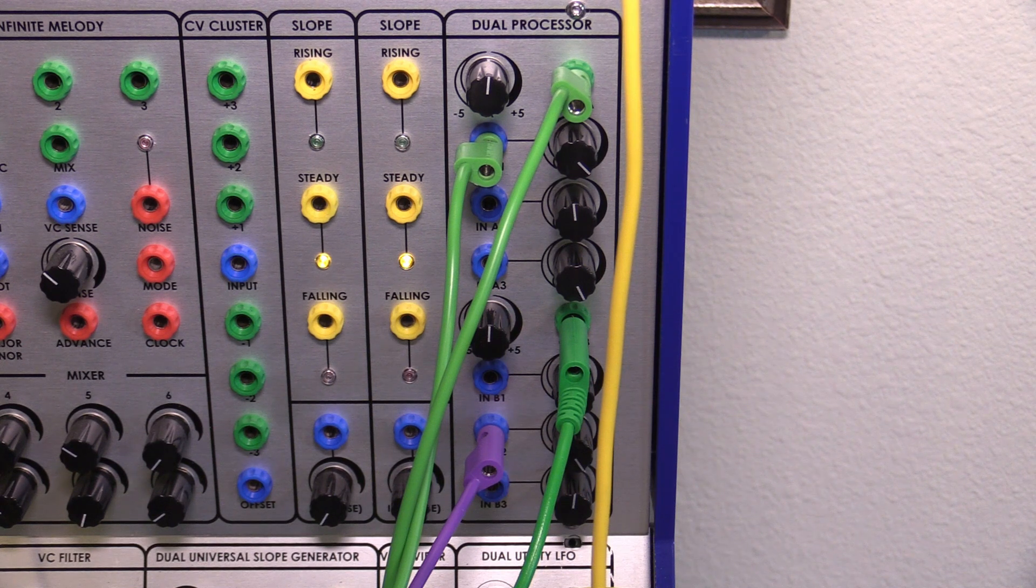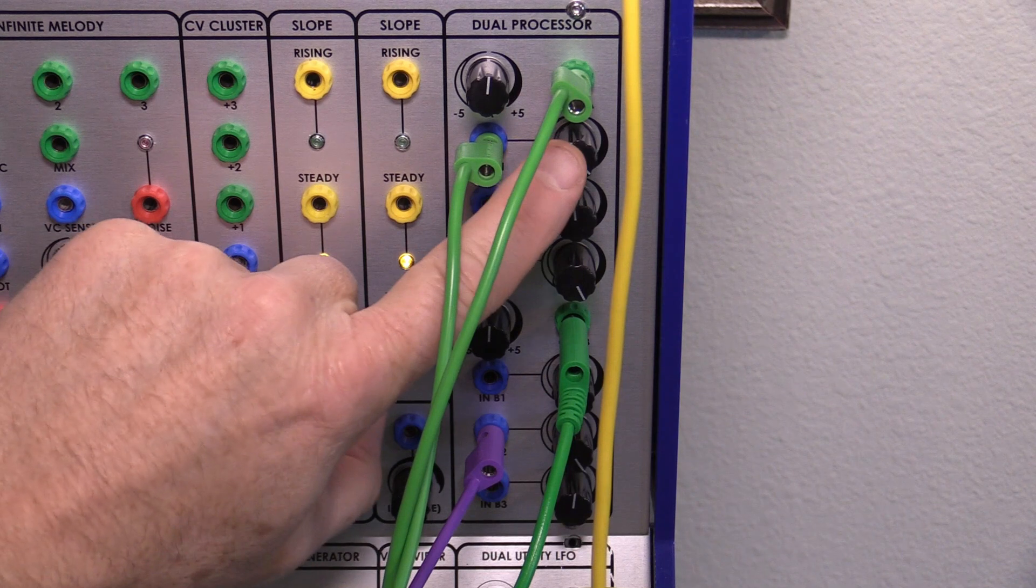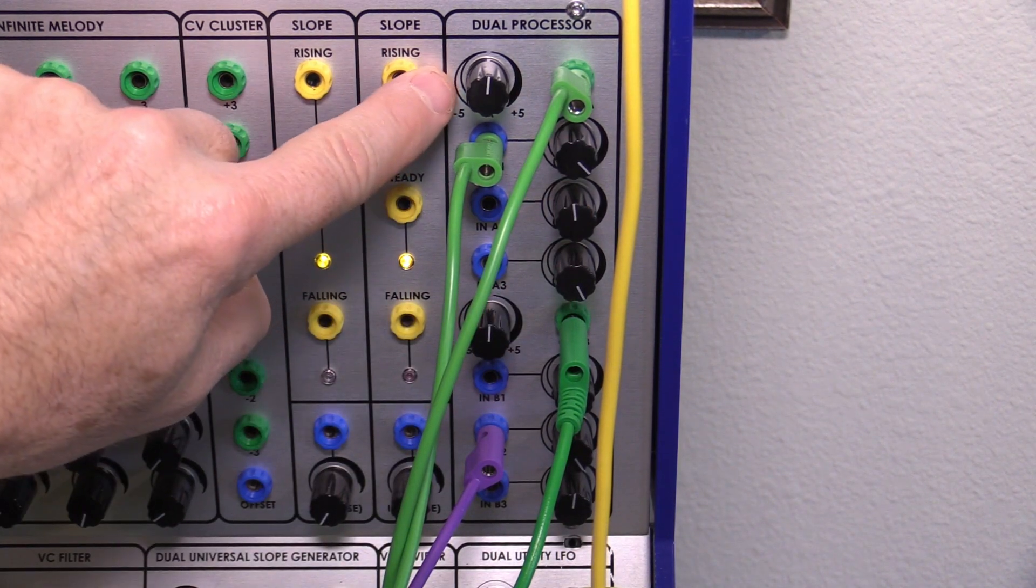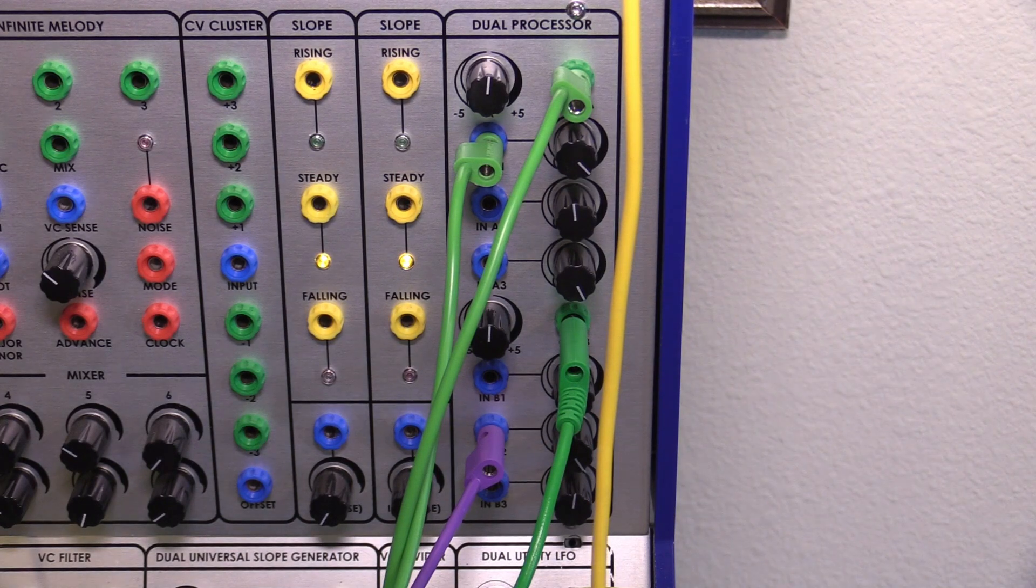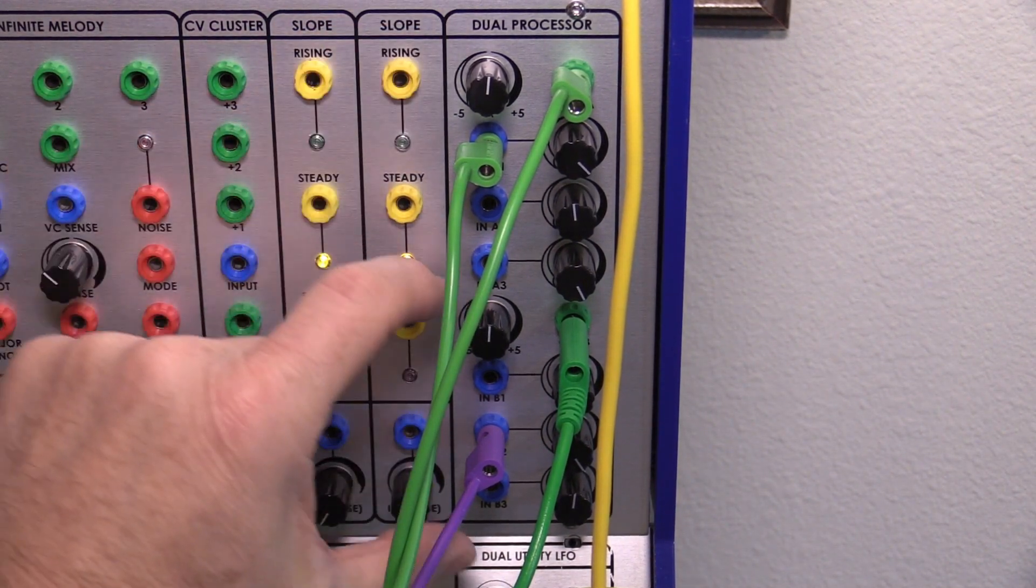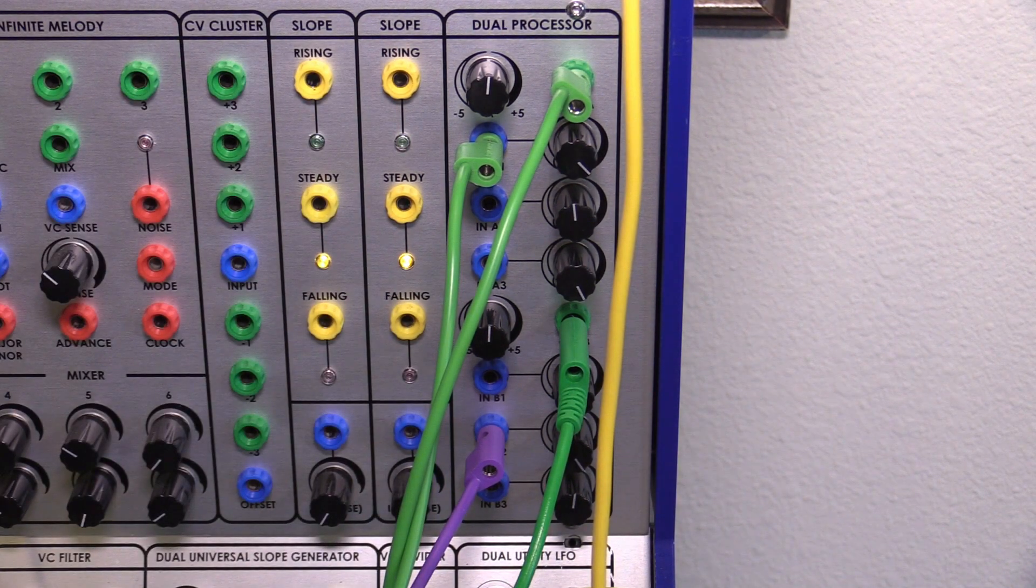So what is the Dual Processor? Well, it's pretty simple. It's a device that has three inputs, three gain knobs that we'll get into in just a moment, one master knob, and one output. And there are two of these, which is why it's called a Dual Processor. This is the top one, this is the bottom one. They don't interact, but they both do exactly the same thing.